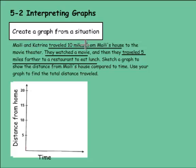But first it says they traveled 10 miles from Maley's house. It doesn't really say how fast they did it, so we're just going to go in a nice line here. And we need to take it all the way to the 10, because that's 10 miles.